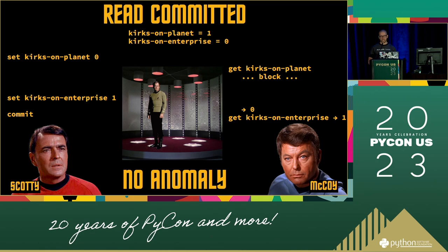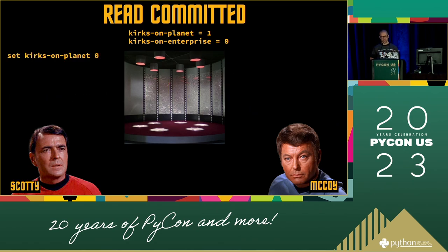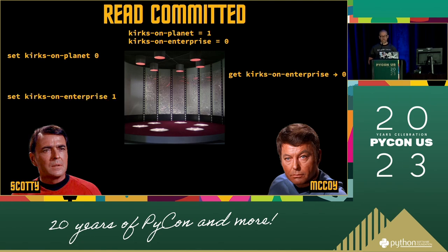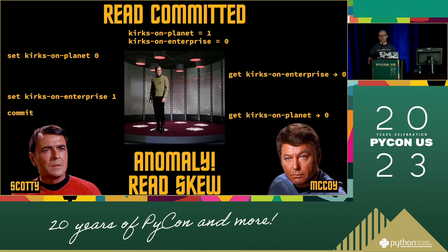This works in read committed partly because Scotty and McCoy are accessing keys in the same order. But if McCoy swaps the order of his reads, we see a problem. McCoy checks Kirk's on-Enterprise first — Scotty doesn't have a lock on that yet — so McCoy sees zero. Scotty then updates it, finishes his transaction, and McCoy finishes his. Once again it's an anomaly, but a different one: it's called a read skew. McCoy is seeing data both from before and after Scotty's transaction, which wouldn't be allowed if transactions were happening one at a time.